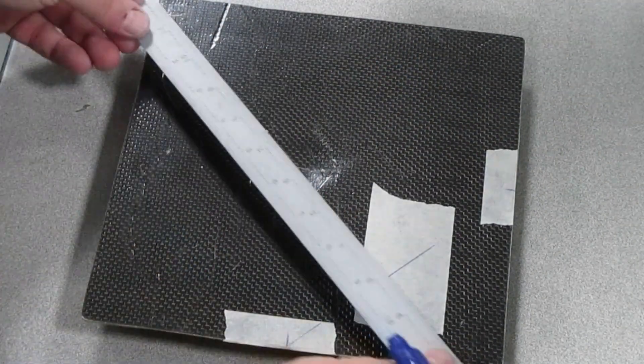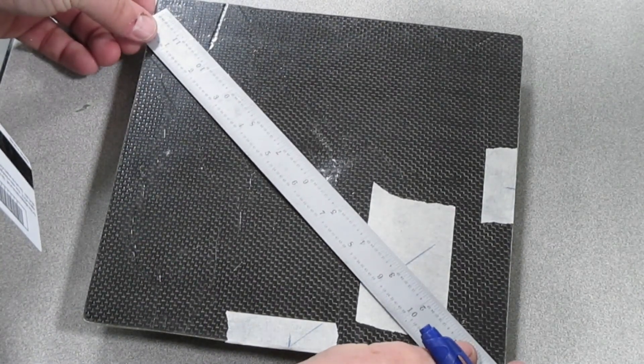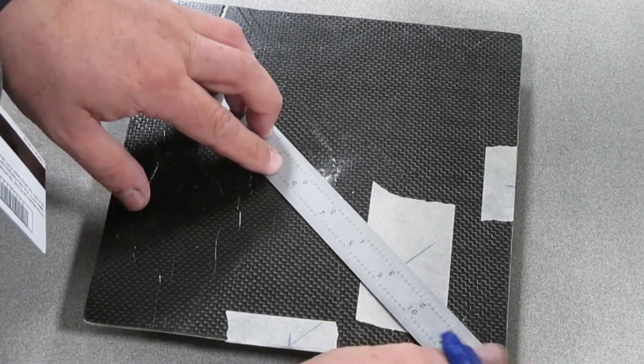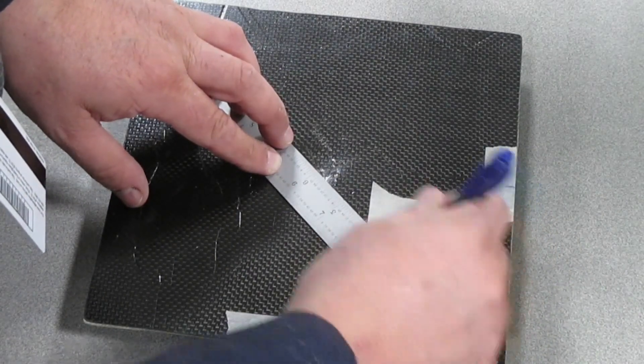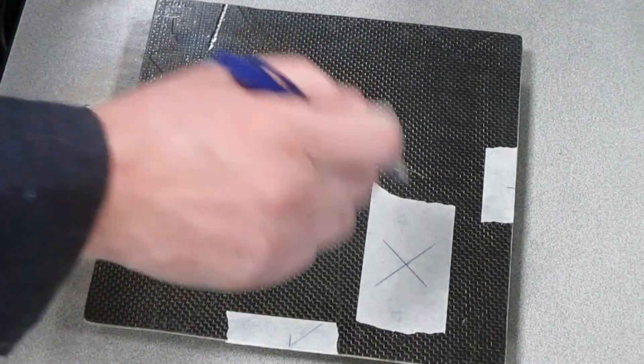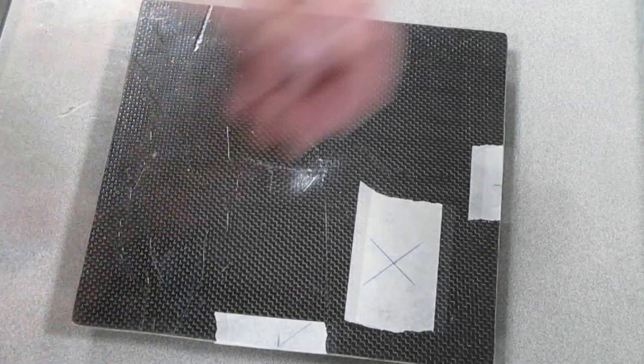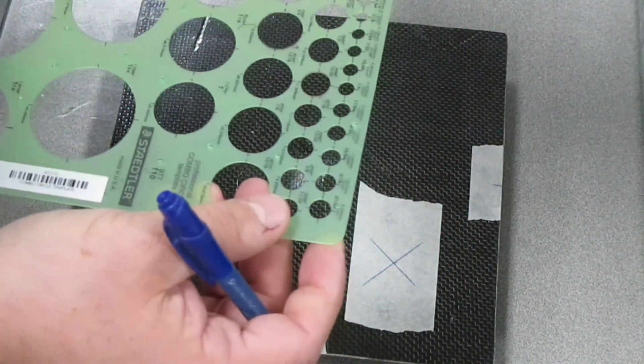From this corner to the far corner, I'm going to draw my second line. Now I know where I'm going to put my hole.